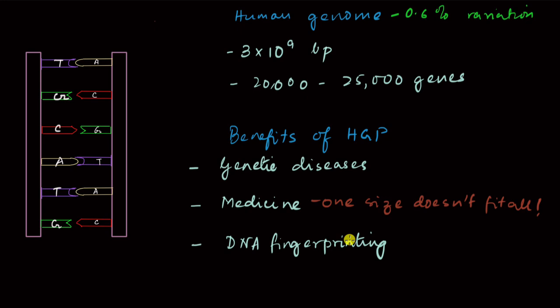But the human genome project made it much easier, so that now, even if you have a very small amount of sample, you can still do DNA fingerprinting to identify the criminal.